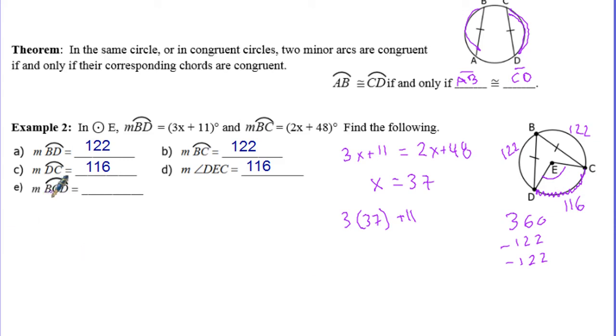They want to know what arc BCD is. BCD goes from B to C to D. Basically, you're just going to add these two numbers together. So 122 plus 116 should give you 238.